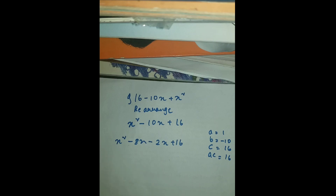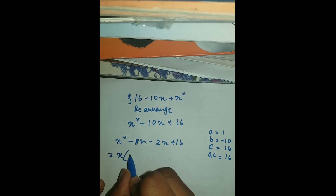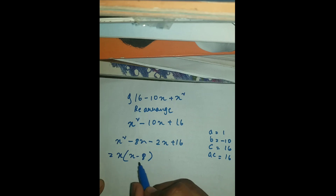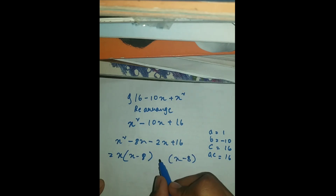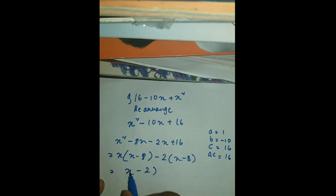So now what we can do here is take a common factor. So x times (x minus 8), and then again x minus 8. So it should be minus 2, and your final answer will be (x minus 2) and (x minus 8).